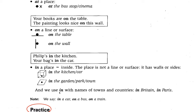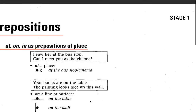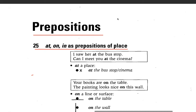In the garden, park, or town. We also use 'in' with the name of a town or country — for example, in Paris. Note: we say 'in a car' but 'on a bus', 'on a train'. So these are the prepositions and examples of prepositions.